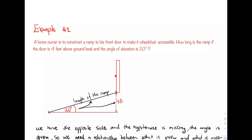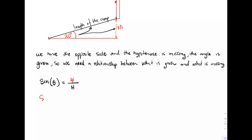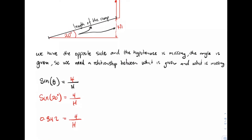The angle is given, so we need a relationship between what is given and what is missing — the hypotenuse and the opposite side — which tells us we need the sine ratio. So we say that sine of theta equals opposite over hypotenuse. Our opposite side is four and our hypotenuse is missing. The angle theta is 20 degrees. So sine of 20 degrees equals four over h. Going to the calculator — remember, our calculator needs to be in degrees mode — we get 0.342 equals four divided by h. Transposing for h, h equals four divided by 0.342.